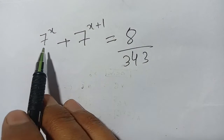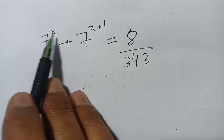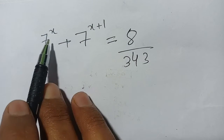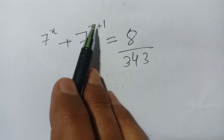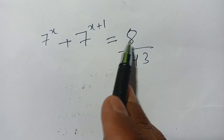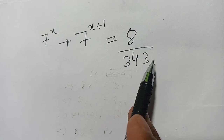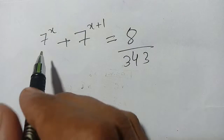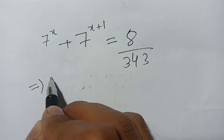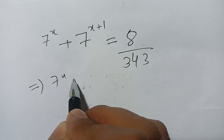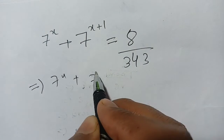Hello everyone. In today's video we are going to solve this exponential problem: 7 power x plus 7 power x plus 1 is equal to 8 divided by 343.